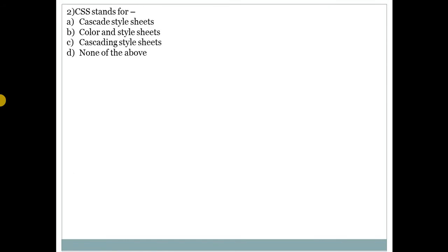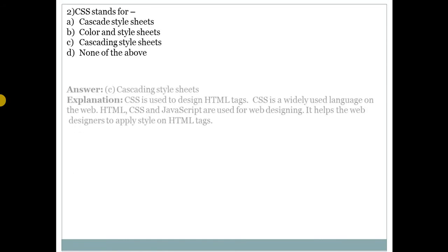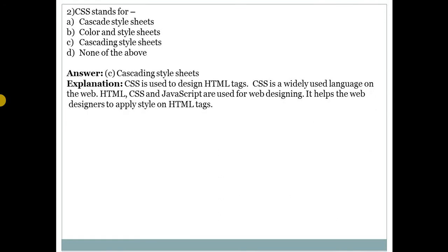Second question: CSS stands for? Answer is C — Cascading Style Sheets. It is used to design HTML tags. CSS is a widely used language on the web, alongside HTML and JavaScript, for designing web pages.